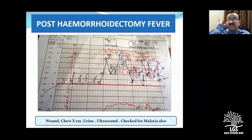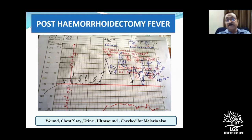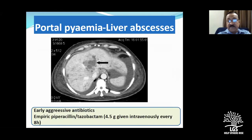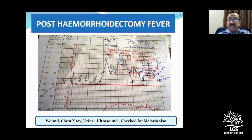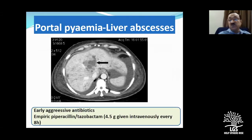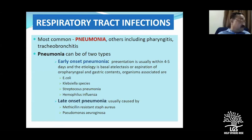An interesting case: a post-hemorrhoidectomy patient with spiking fever from day two — chest X-ray normal, urine normal, ultrasound suspicious — ultimately had portal pyemia with liver abscesses. The patient had a WBC count of 28,000, very toxic, high-grade fever, and ultimately responded to treatment. Portal pyemia following hemorrhoidectomy is known; even banding of hemorrhoids has been reported to cause pylephlebitis, so CT scan provides a better picture of the liver and intra-abdominal situation.